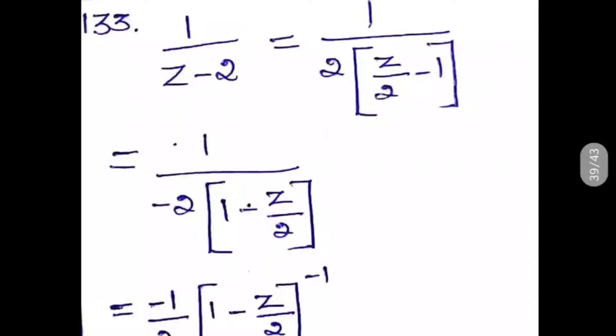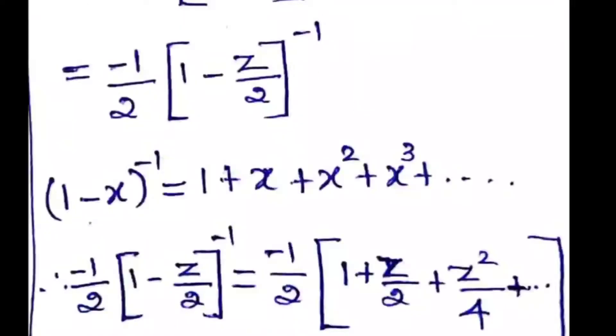Because it is in the denominator, and for (1-x)^(-1) we know the expansion. We are taking the minus outside the bracket so we will get -2 into (1 - z/2).